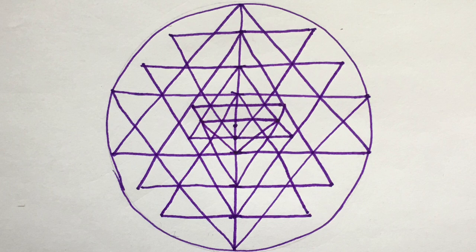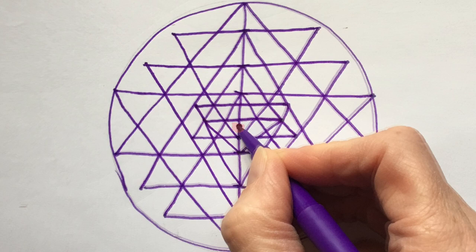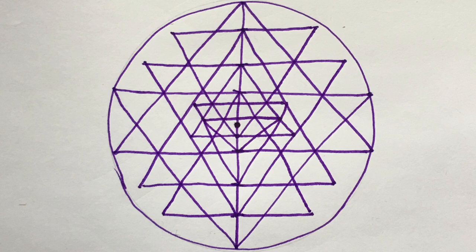To draw the bindu make a small circle at the center of the yantra. If you were drawing in pencil you could erase the vertical line now.